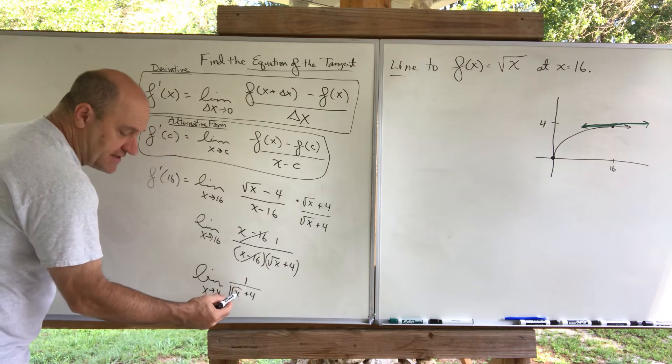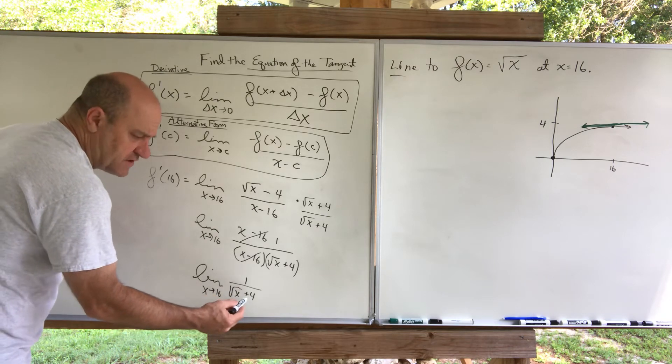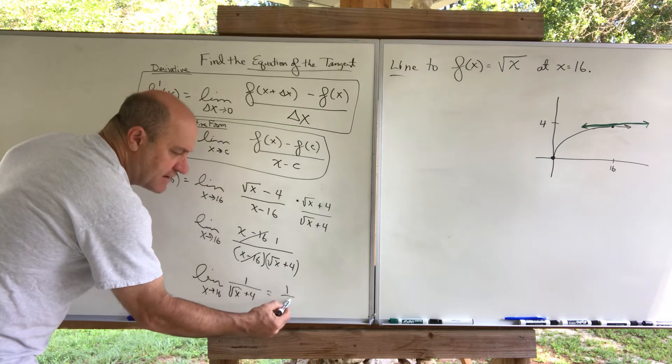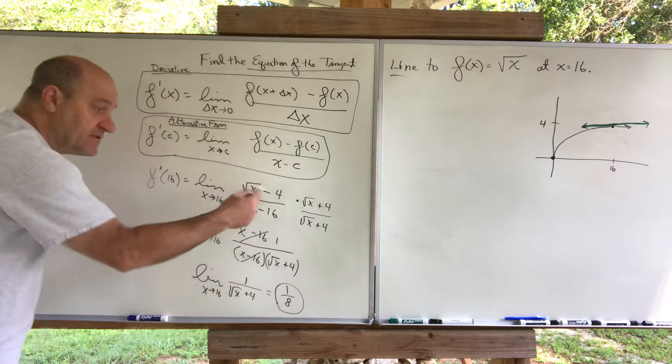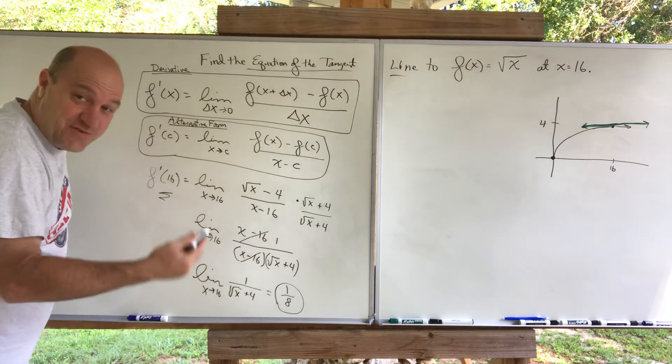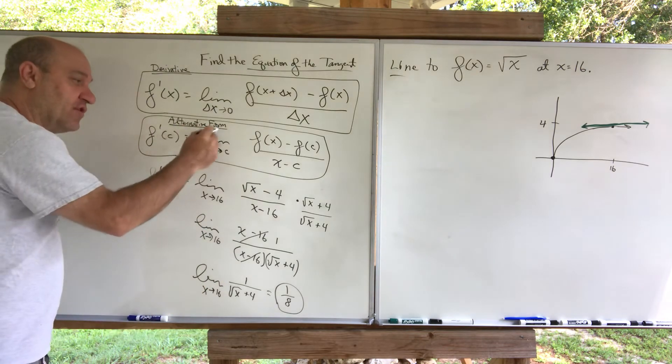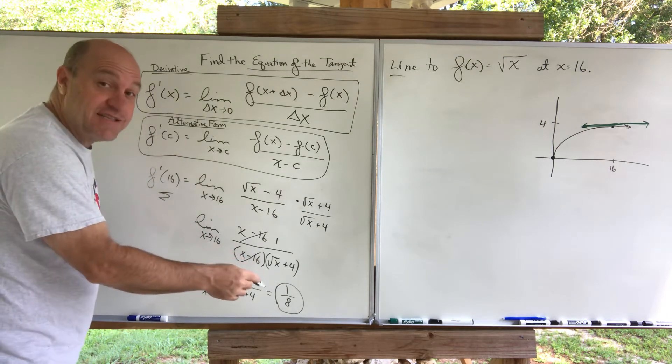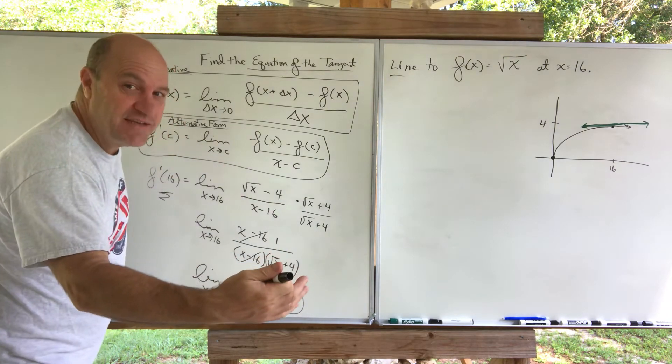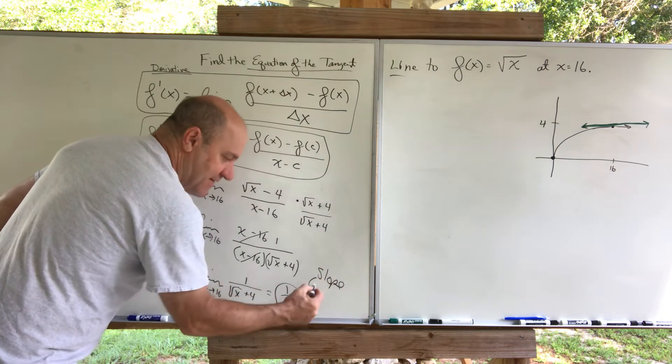So I am left with this, the limit as x goes to 16 of 1 over the square root of x plus 4. I had to do a little conjugate work there. Anyway, now you plug in the 16, and that's a 4. The square root of 16 is a 4. 4 plus 4 is 8. This is 1 eighth. And that's the answer to this limit, which is what? It's the derivative, and it's already been evaluated at the point 16. It's this alternative form of the derivative. The derivative is the slope of the tangent line. So this is my slope at this point.